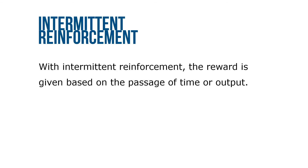With intermittent reinforcement, the reward is given based on the passage of time or output. When the reward is based on the passage of time, it's called an interval schedule. When it's based on output, it's called a ratio schedule.